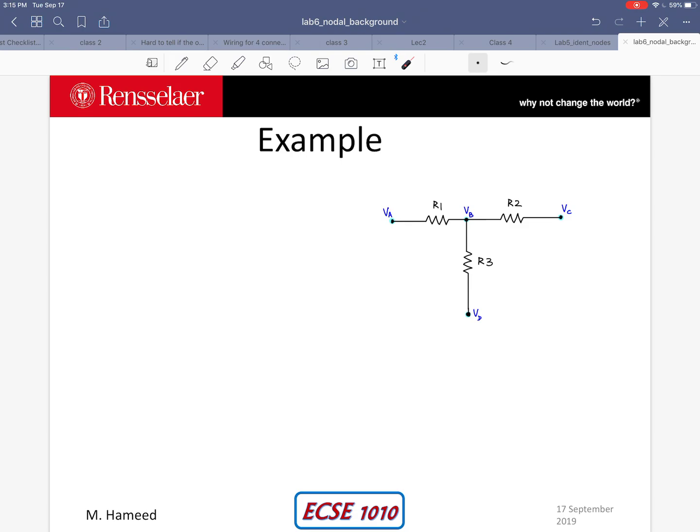My goal is to apply KCL and essentially write all the currents that are leaving this node and make them equal to zero. So can I perform KCL at this particular node?